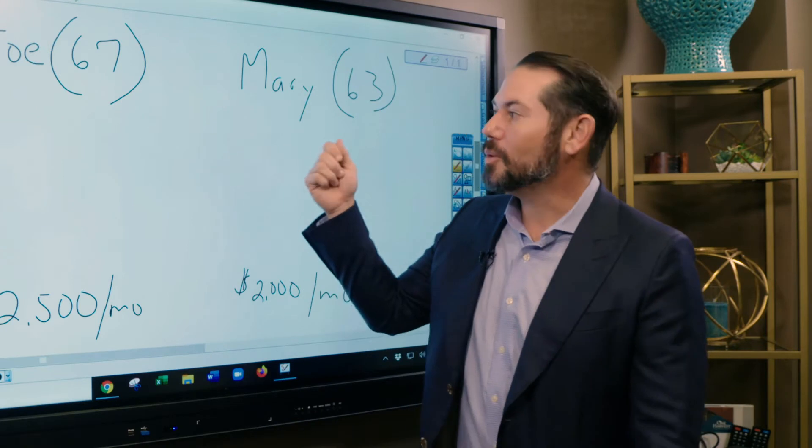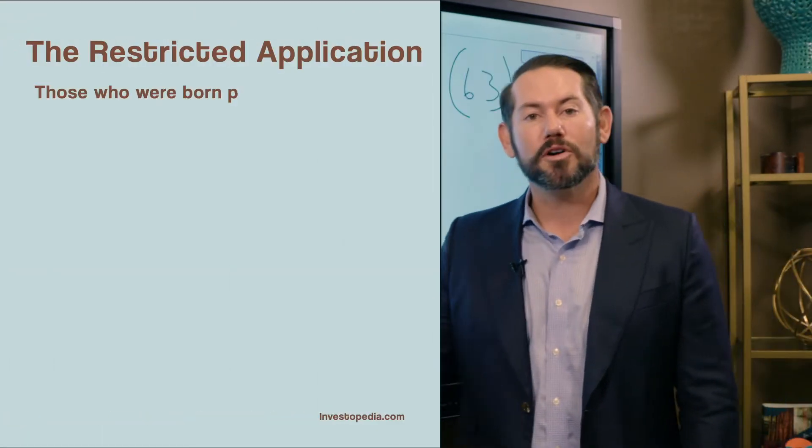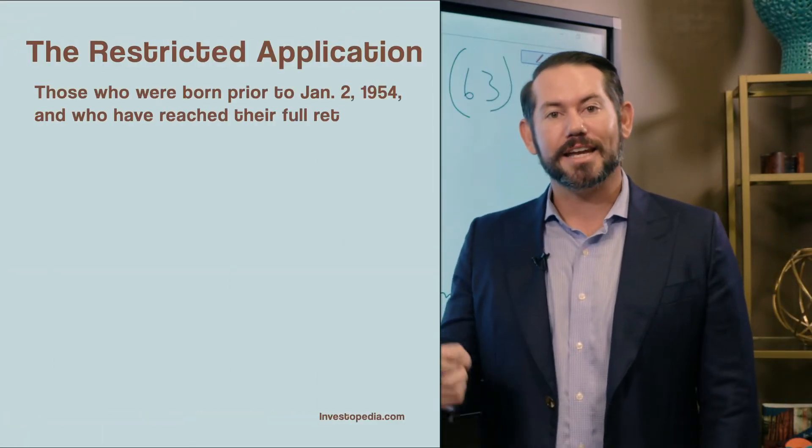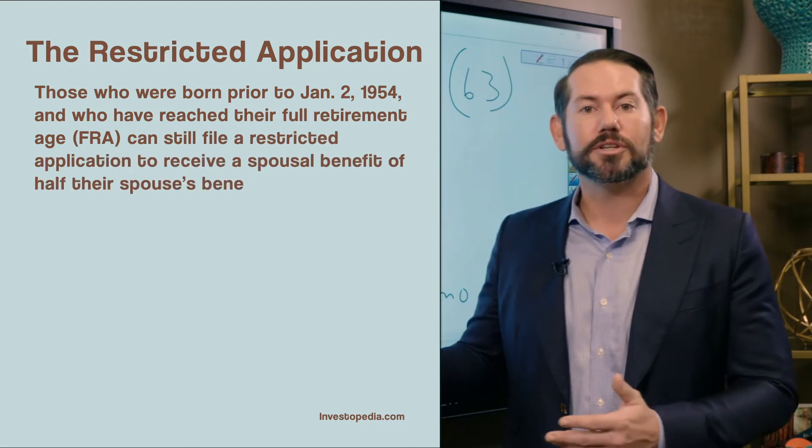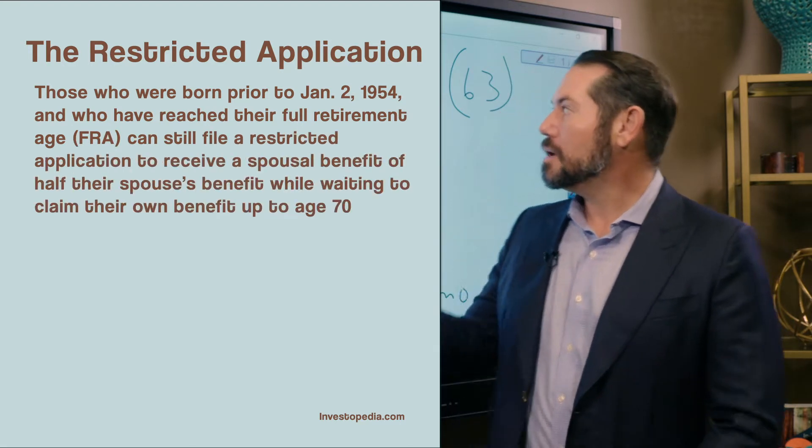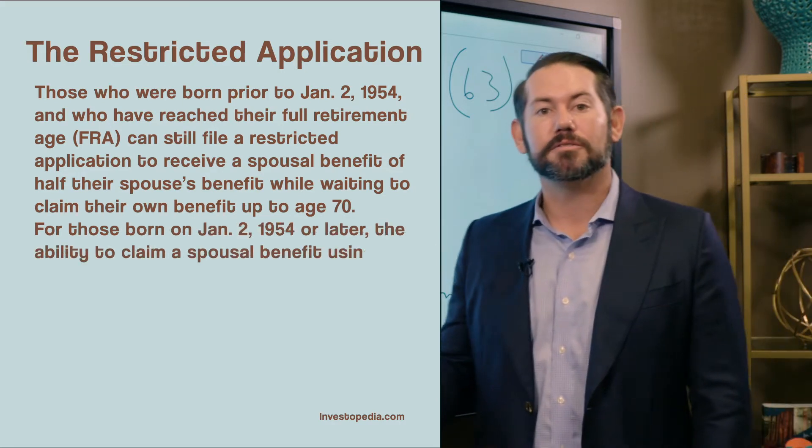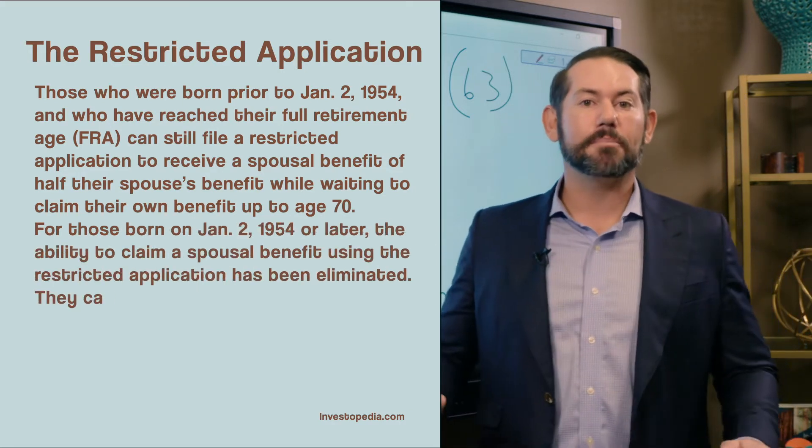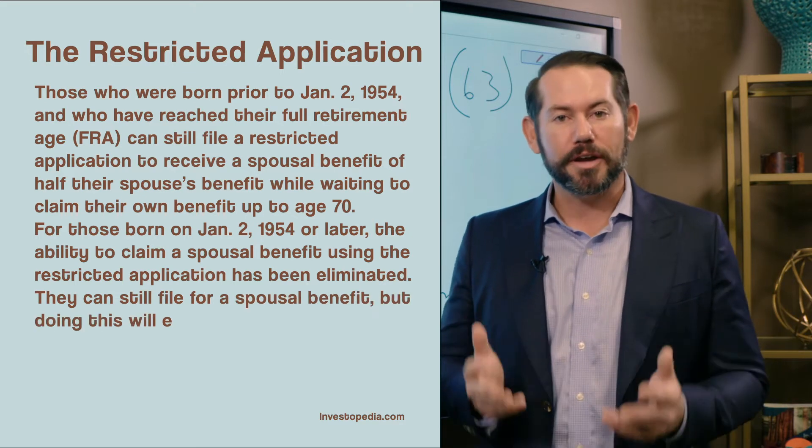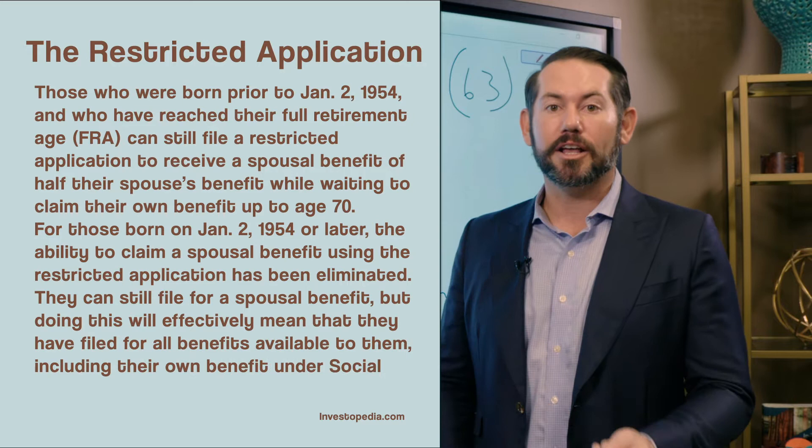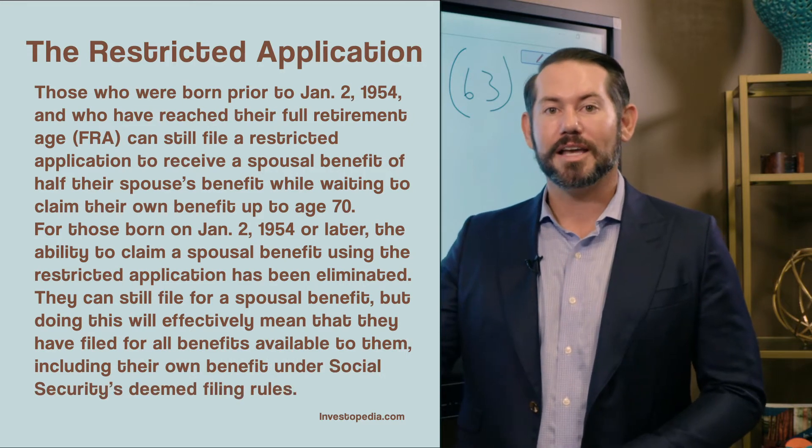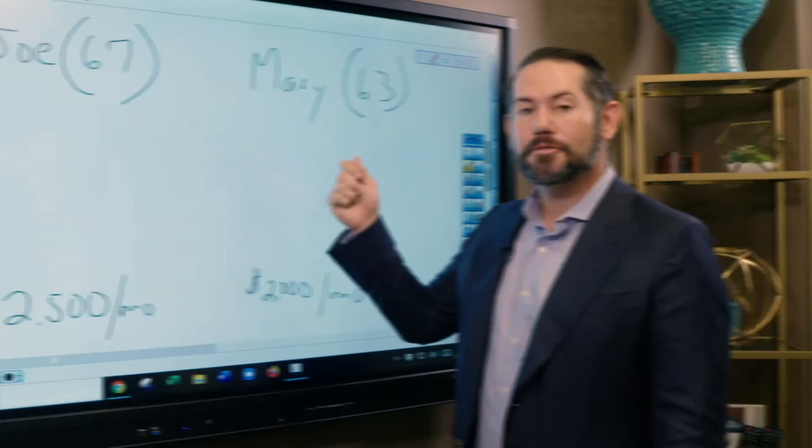Well, what Mary is unaware of is that her friend was born before January 2nd, 1954. This is a very important date with the recent changes in Social Security. Mary was born after January 2nd, 1954. So the restricted application is no longer an available option as a planning technique for Social Security that's available to her. It was for her friend, but not for Mary.